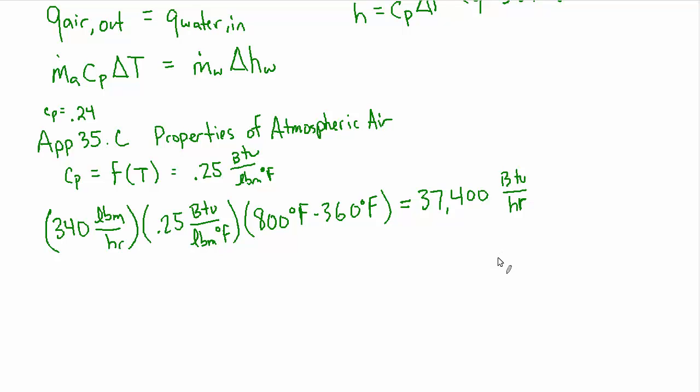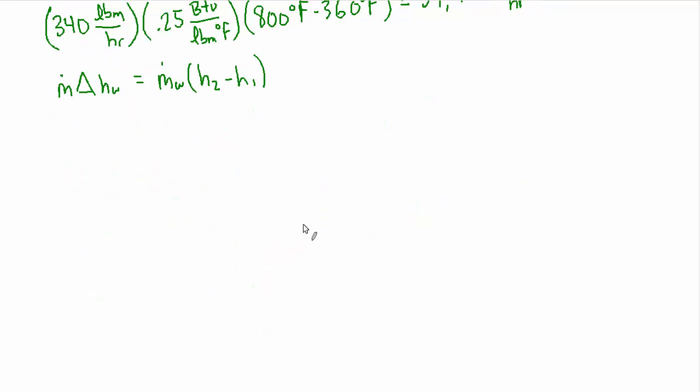So now we can turn our attention to the right side of the equation. So let's unpack that a little bit. We have M dot delta H for the water, which is equal to M dot water times H2 minus H1, where H2 is the final temperature of the water and H1 is the initial temperature of the water. And now we can find M dot W by looking up H2 and H1.